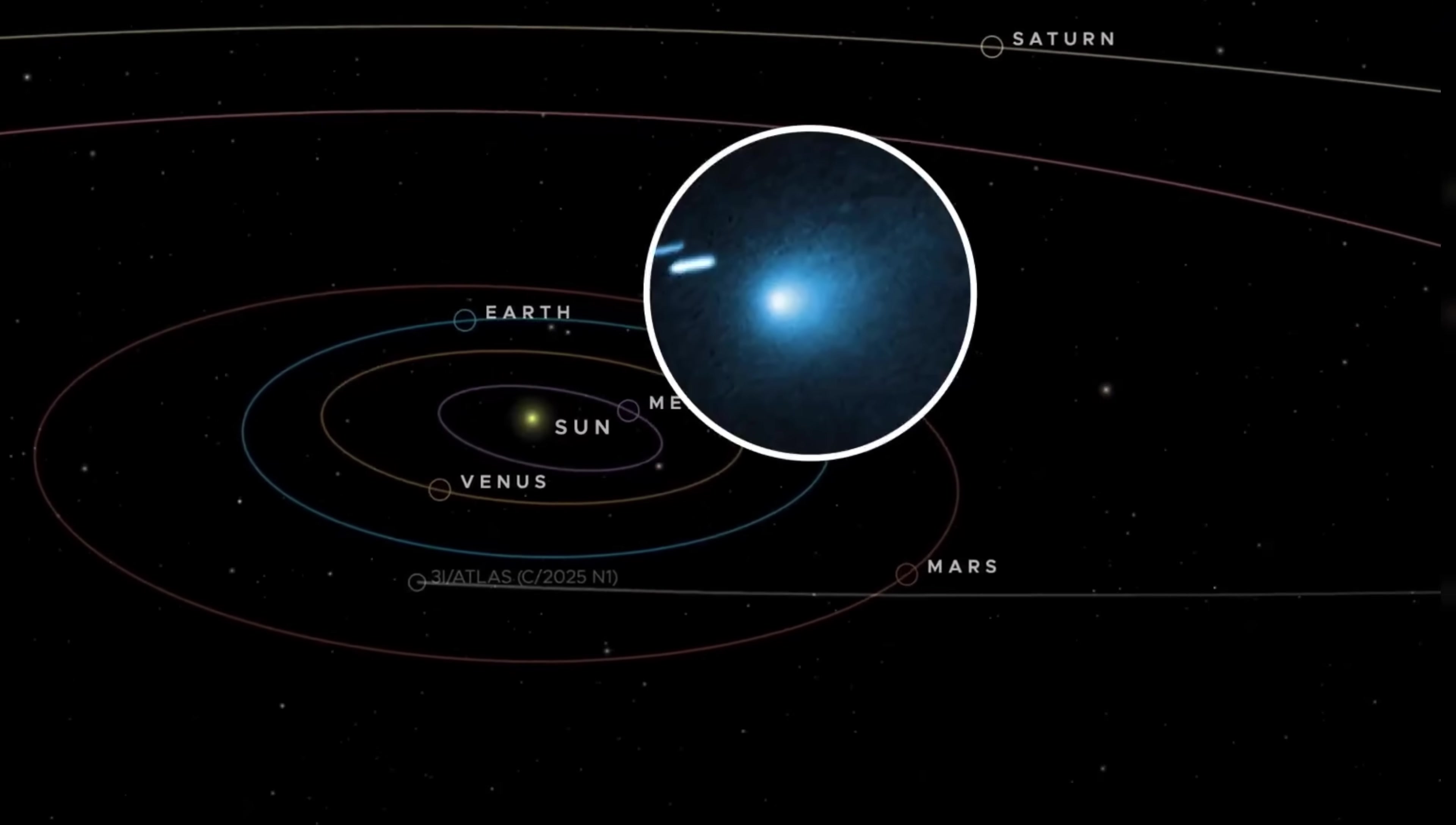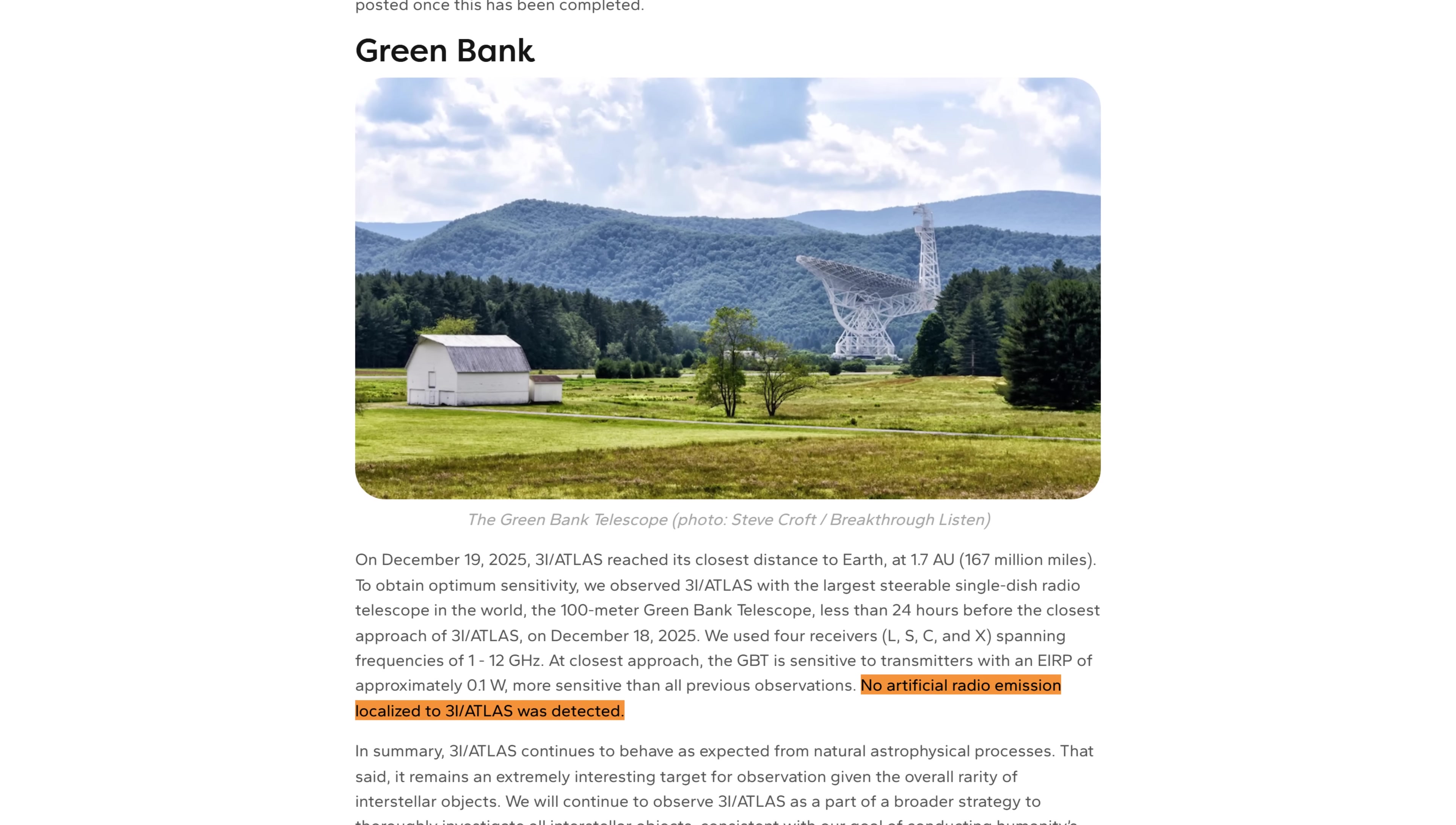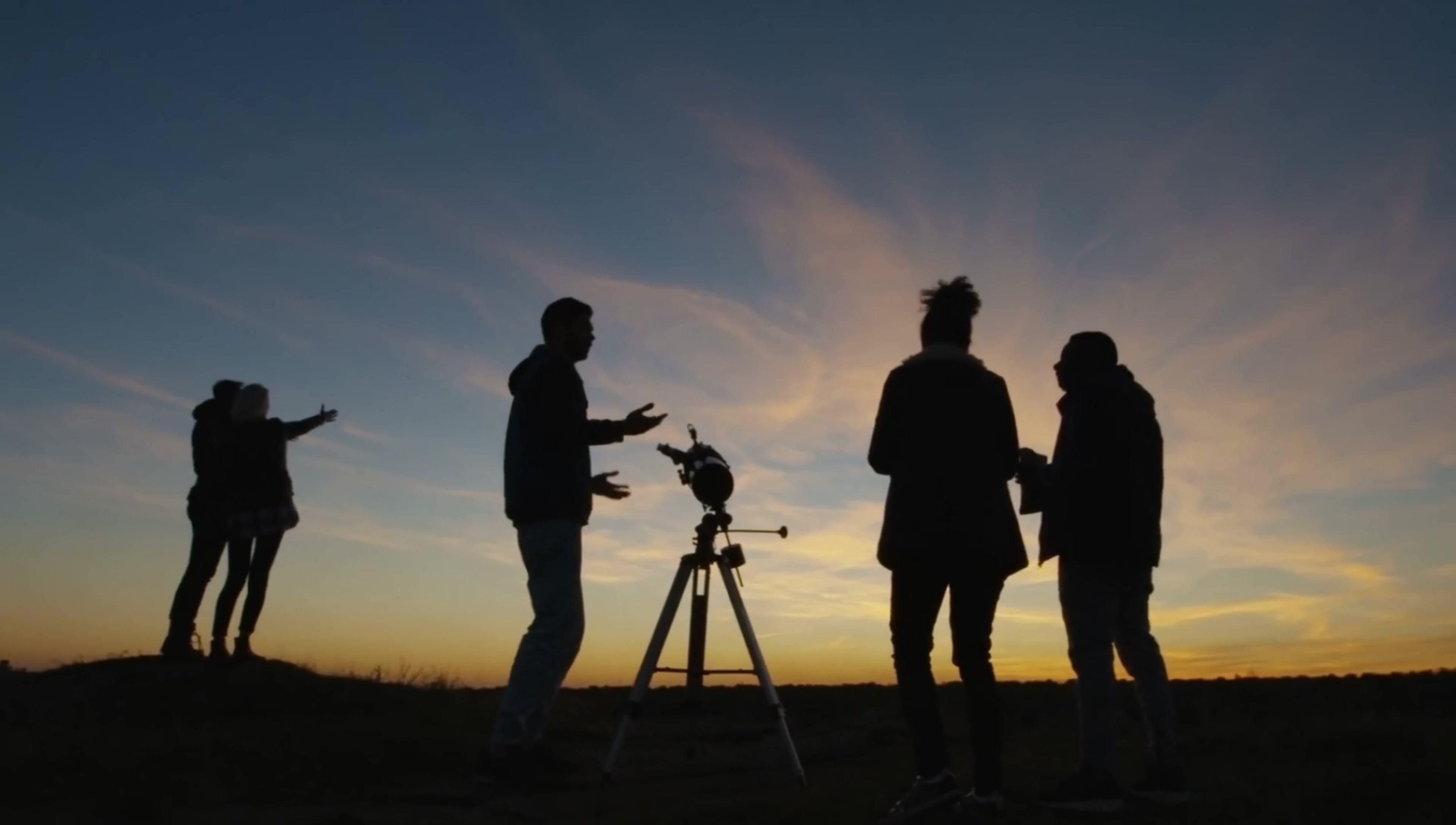The results of this high-stakes observation have now established a strict upper limit on the possibility of alien presence. If 3I/ATLAS were an active probe, it is transmitting with less power than a standard consumer light bulb, effectively ruling out any active beacon or high-bandwidth telemetry directed our way. This moment represents the culmination of months of intense speculation, pivoting the narrative from science fiction back to the equally fascinating realm of cometary physics.